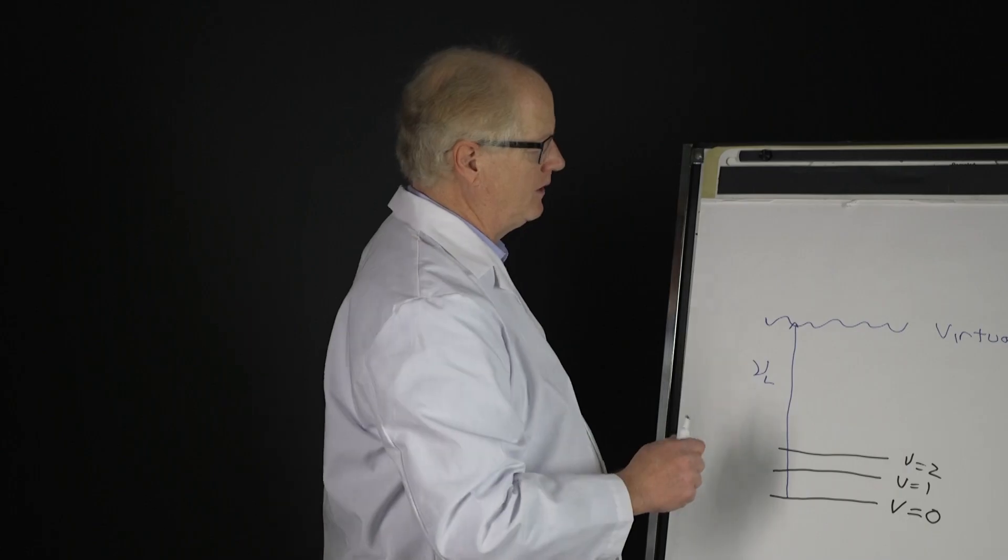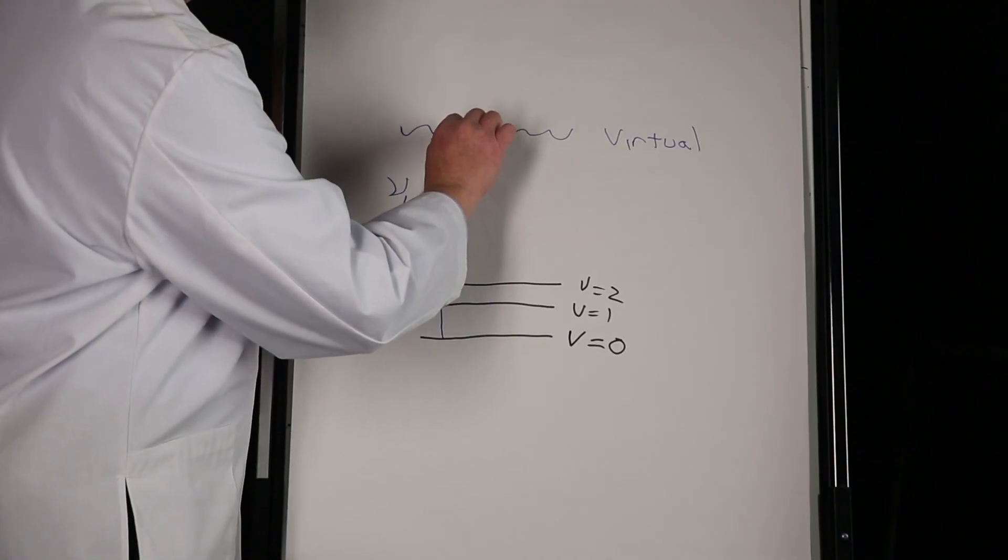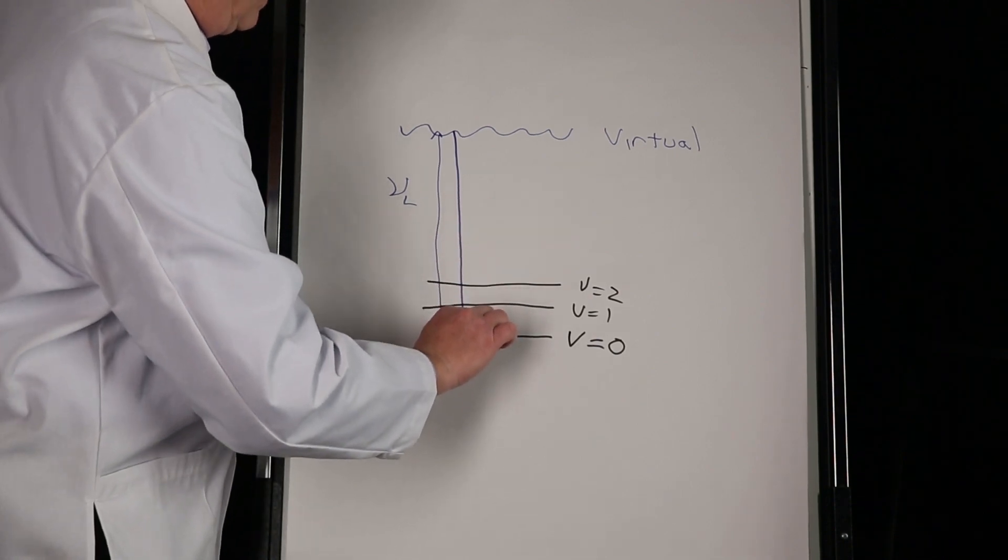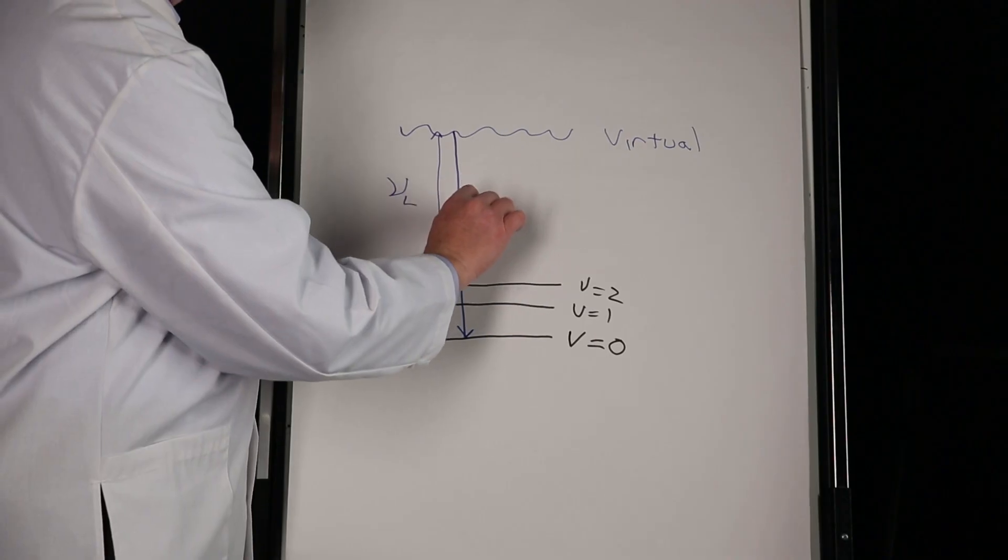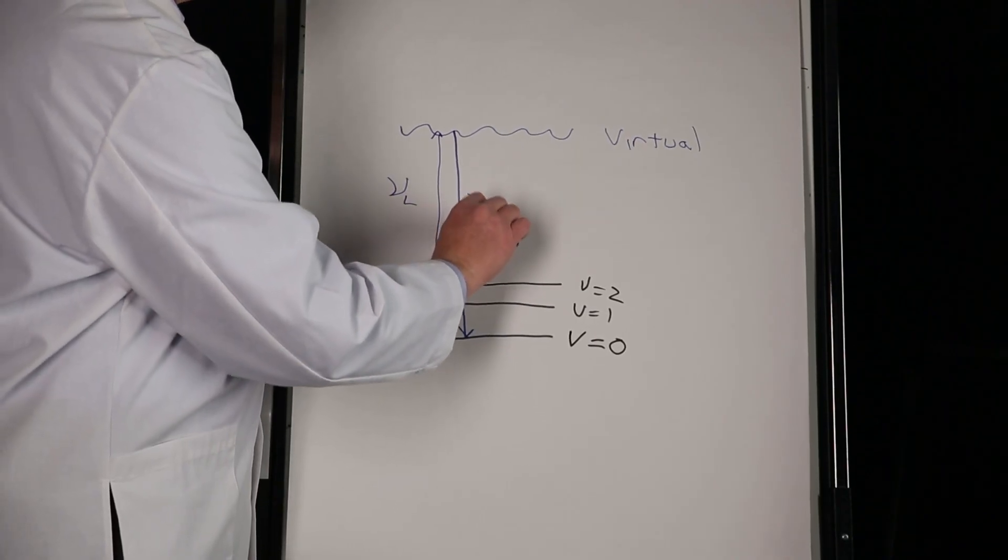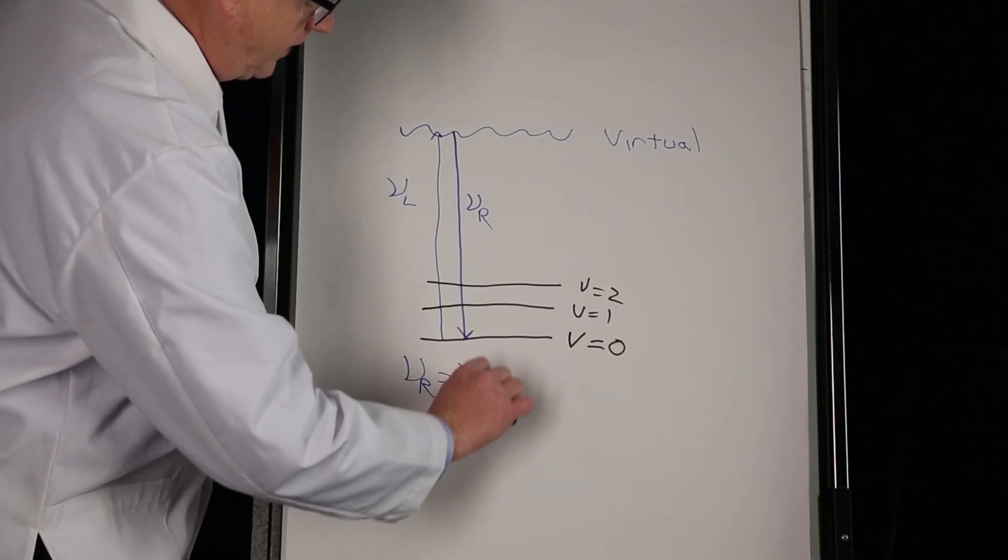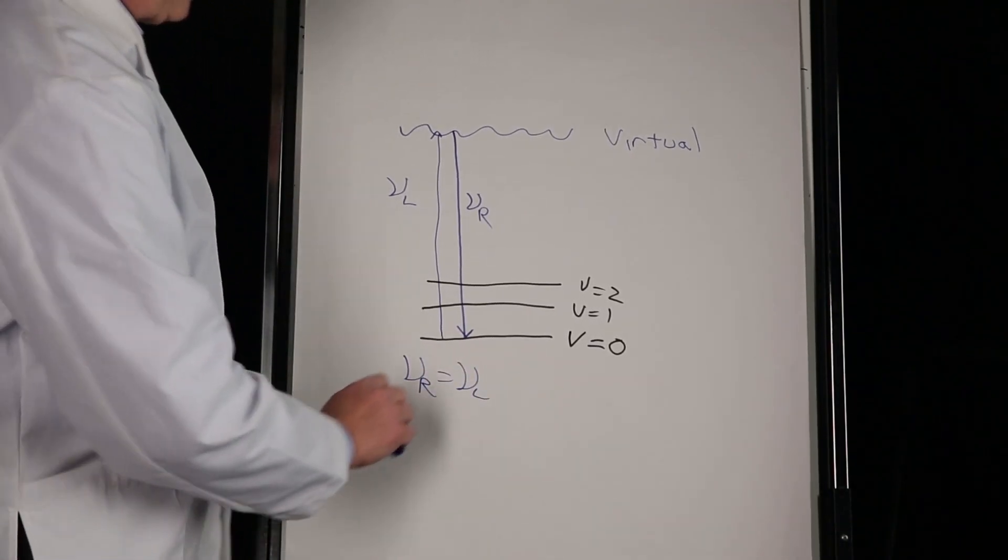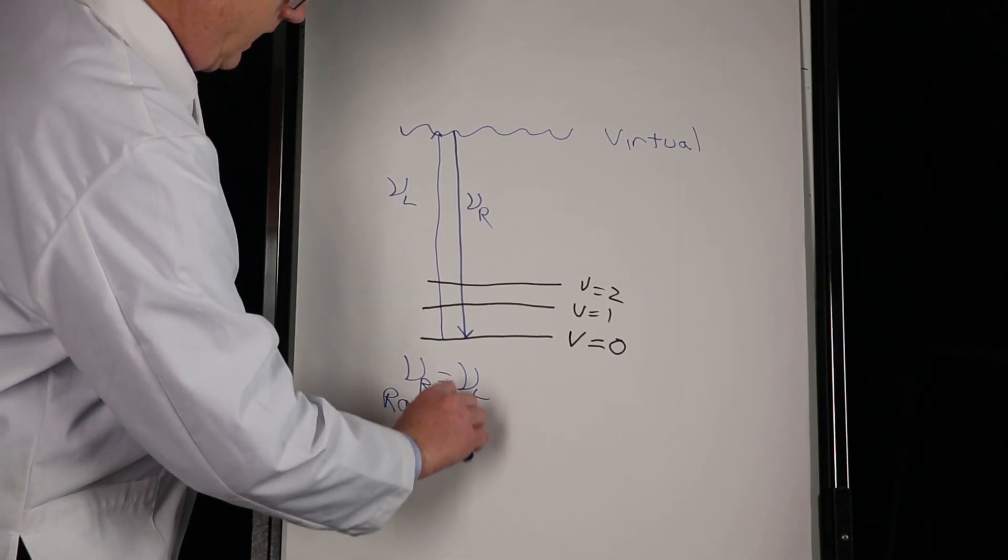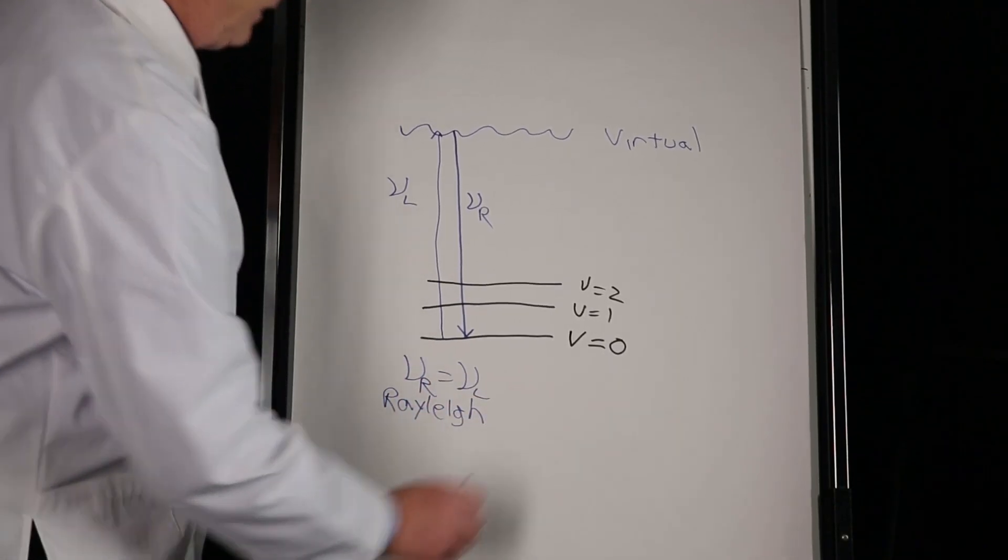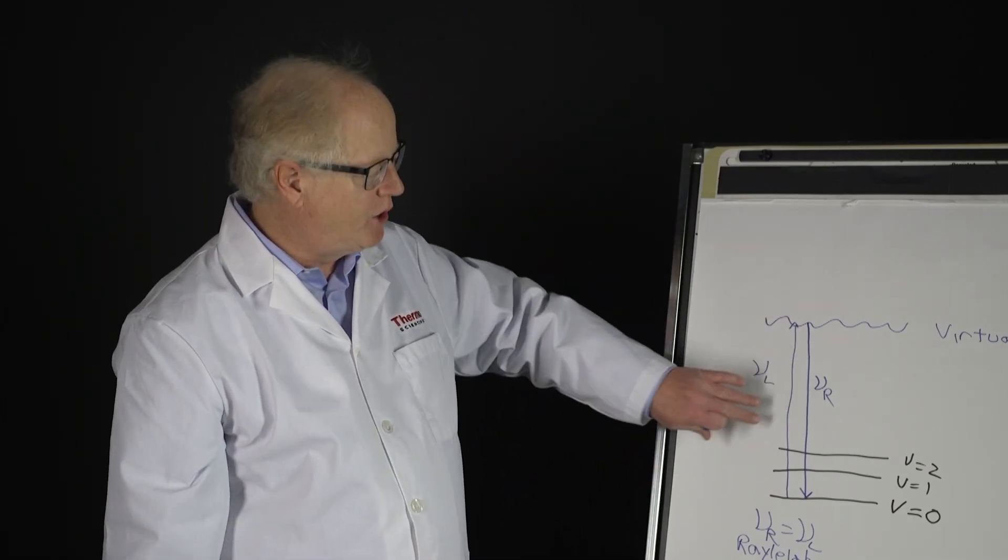Now once it's there, one of two things can happen. The first thing is it can scatter that light right back and go right back to the ground state, and this is going to be the νR. In this case, νR equals νL, and the reason I call it R is because this is called Rayleigh light or Rayleigh scattering.